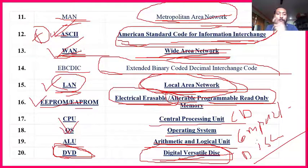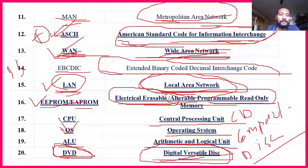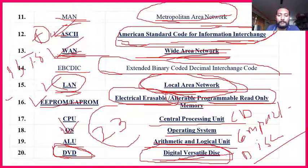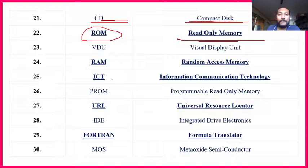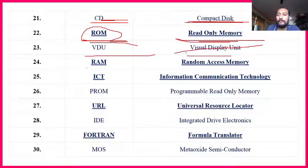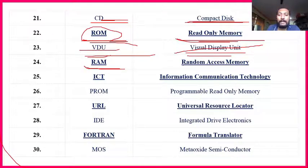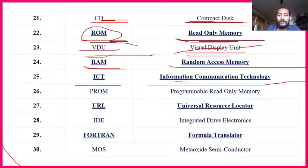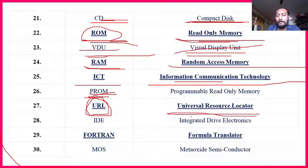From the last slide we had 15; in this slide 8 are important — so total becomes 23. ROM, RAM, VDU, ICT are repeating, but URL is very important. URL — Universal Resource Locator — this question was asked last year. When you search anything online, you get 'http://' or 'www.' — that is called URL. When I send a link for a class, anyone can join through that URL link globally.